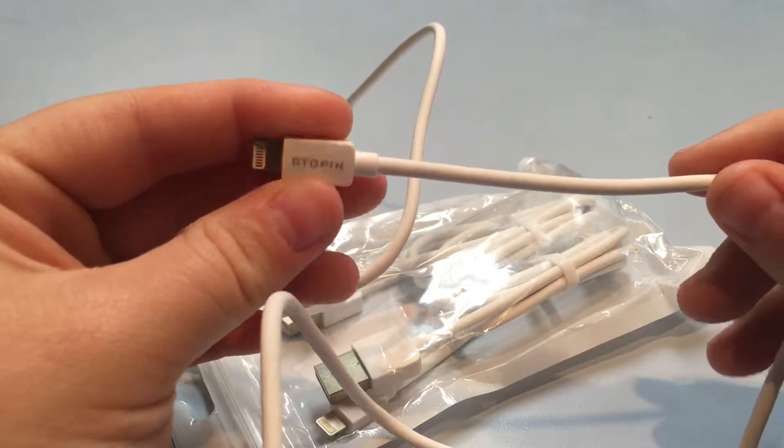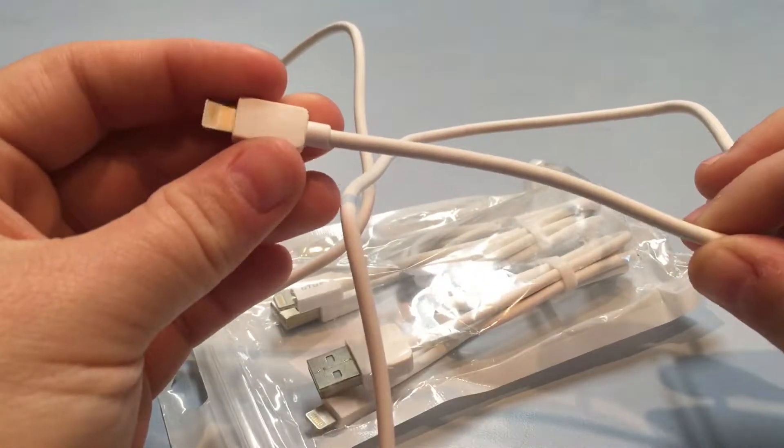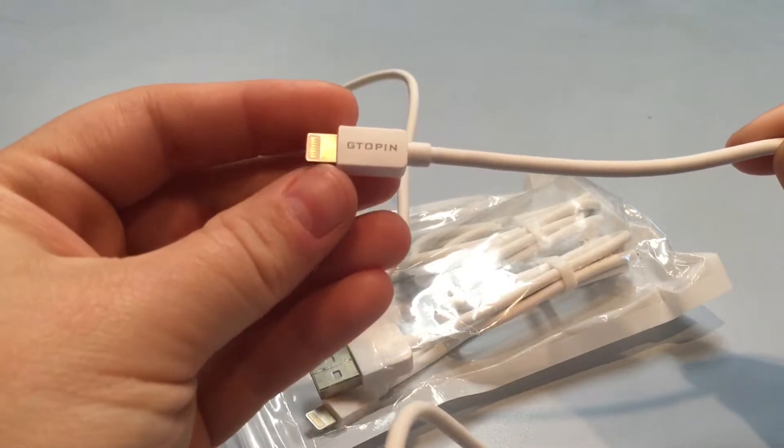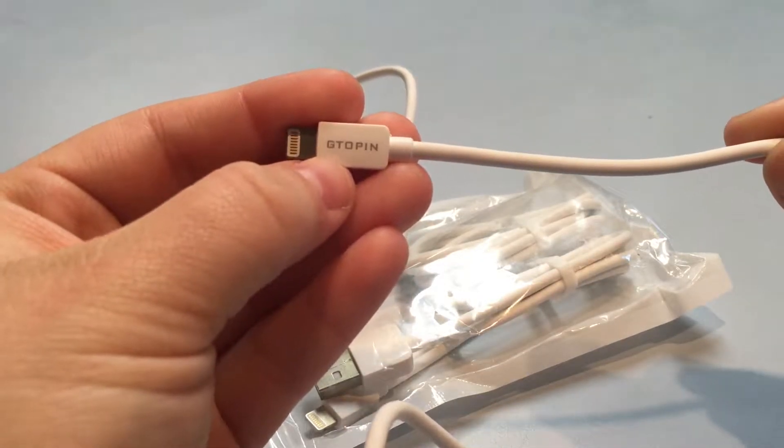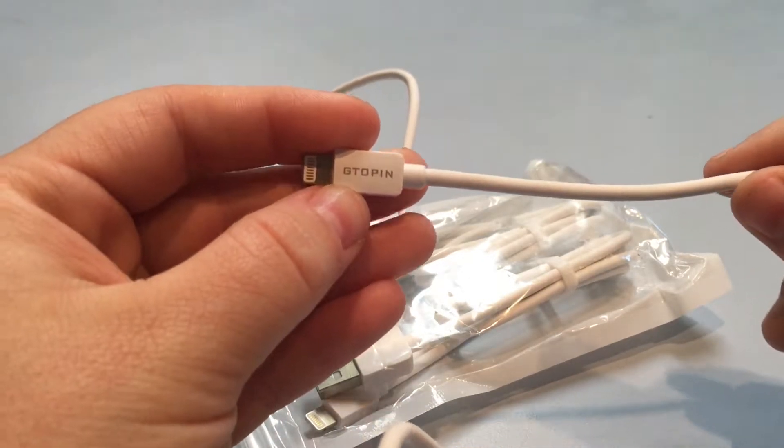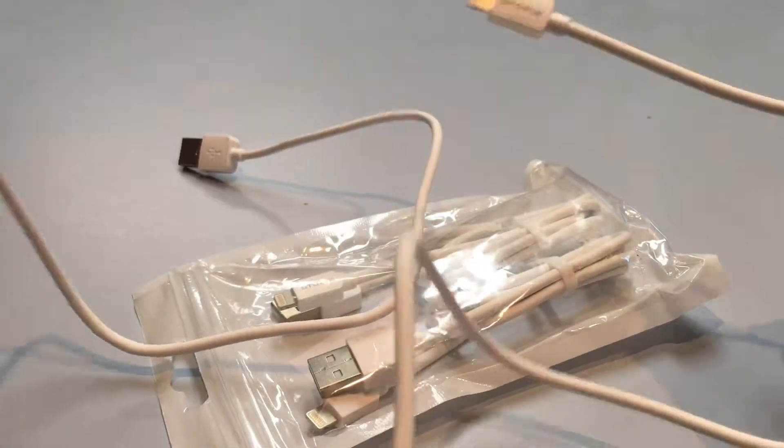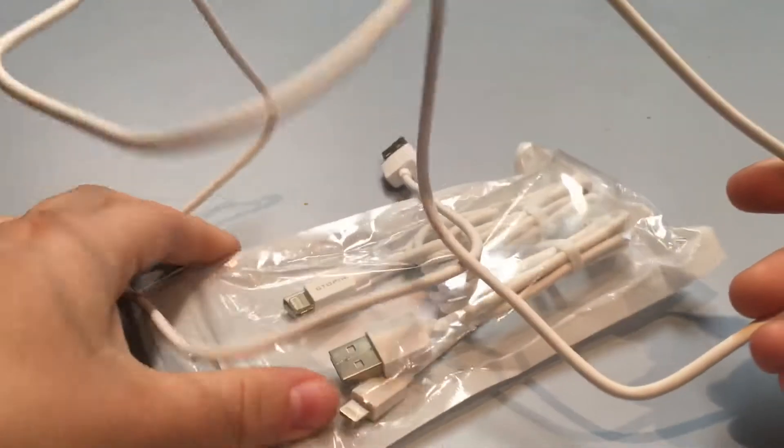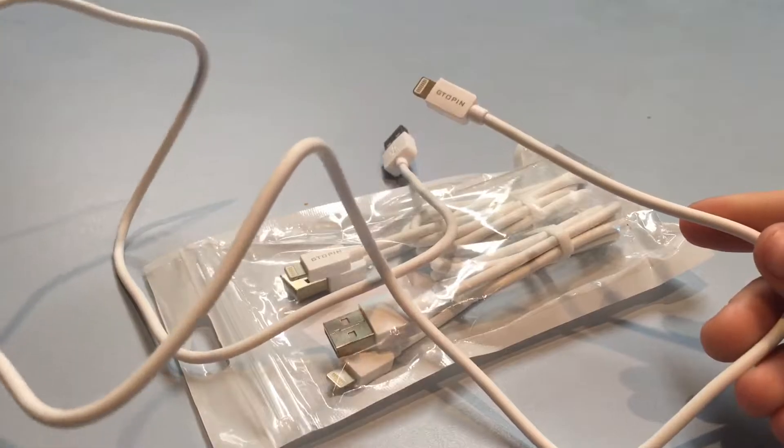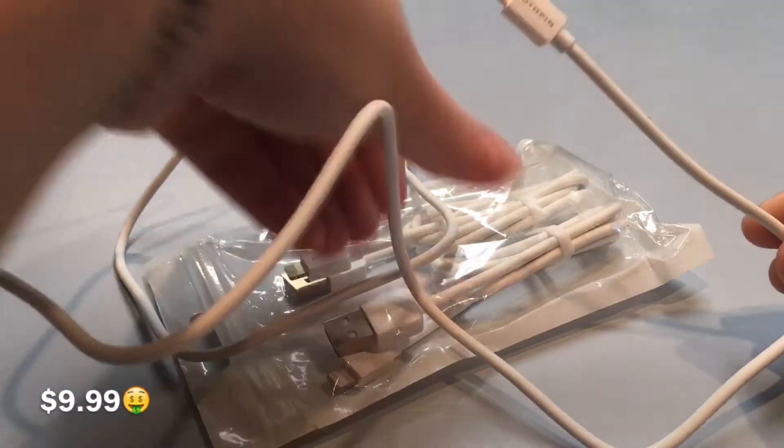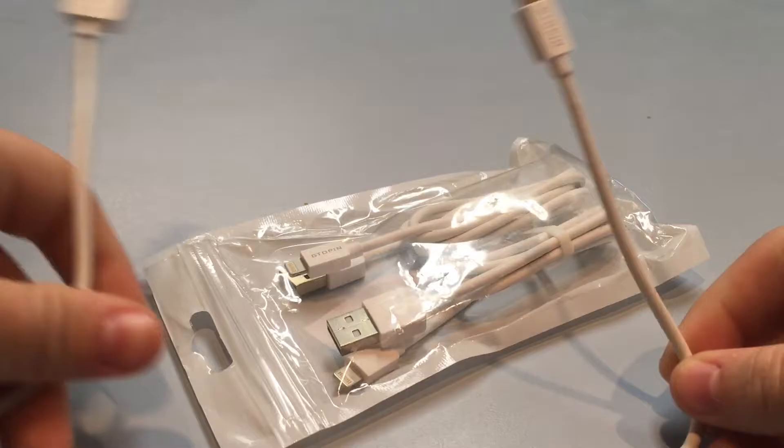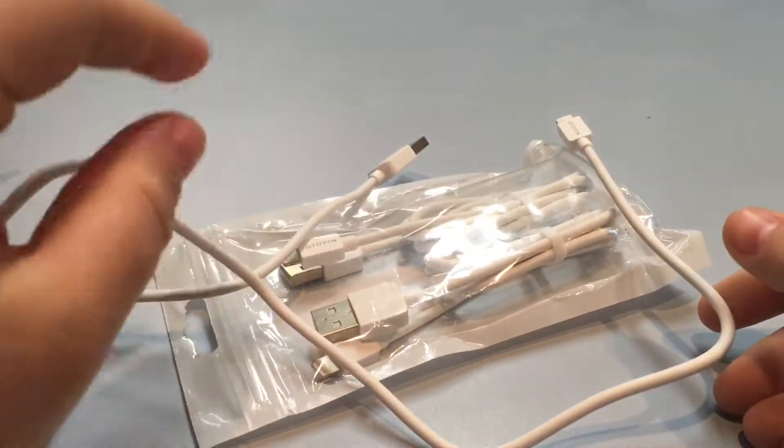This is my review of the Toppin lightning cable for iPhone. I'm not exactly sure how to pronounce that, I'm assuming the G would be silent, so I'm just going to call it Toppin. These cables you get three in a pack for, at the time of the review, $9.99. They are three feet apiece, just like the regular Apple cable.